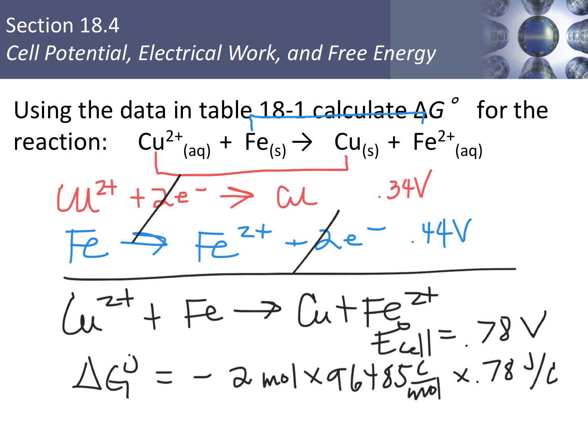Using the equation from the previous slide, I have negative 2 moles of electrons times the Faraday constant, 96,485 coulombs per mole, times the cell potential 0.78 volts (which is 0.78 joules per coulomb). My answer for delta G is negative 1.5 × 10⁵ joules, which could be converted to kilojoules by dividing by 1,000. Because of the negative sign, delta G is negative — just as it should be for thermodynamically favored or spontaneous processes.